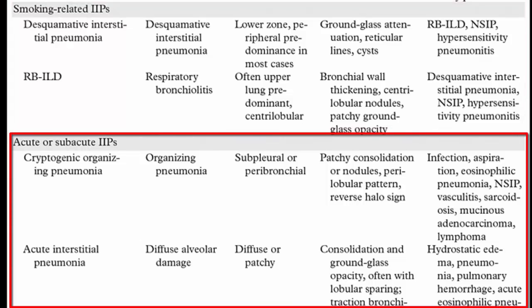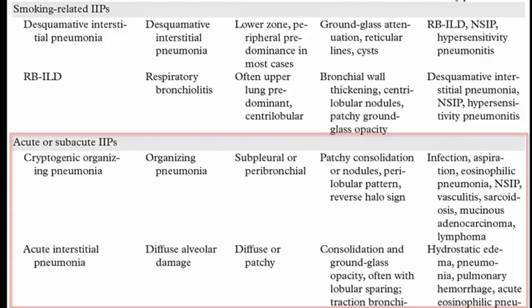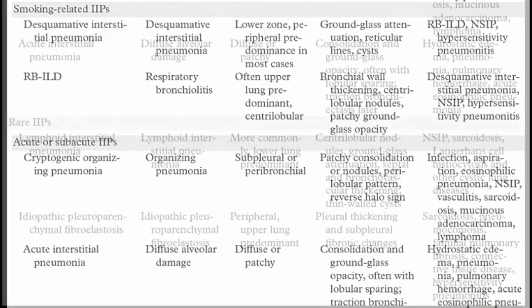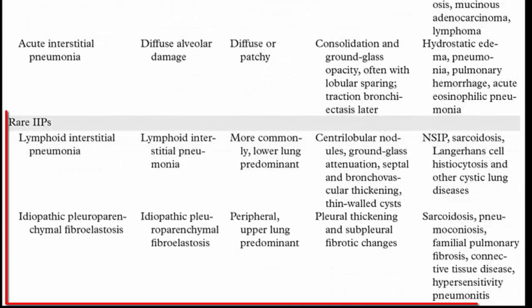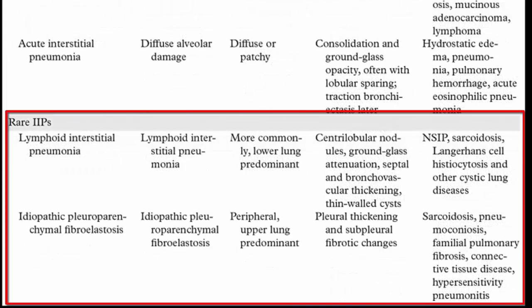The third group is the acute or subacute idiopathic interstitial pneumonias, including cryptogenic organizing pneumonia and acute interstitial pneumonia. The fourth group is rare idiopathic interstitial pneumonias, including lymphocytic interstitial pneumonitis and idiopathic pleuro-parenchymal fibroelastosis.